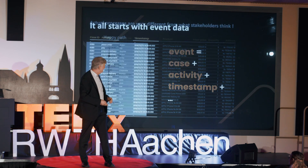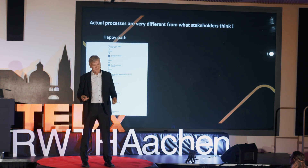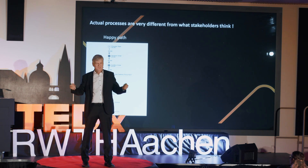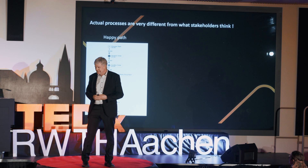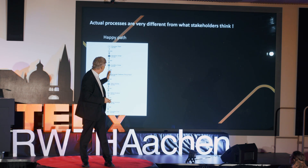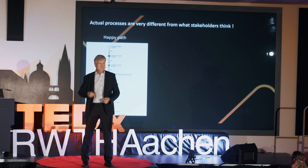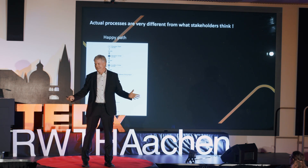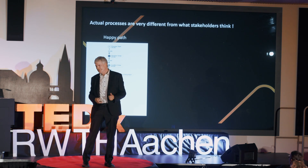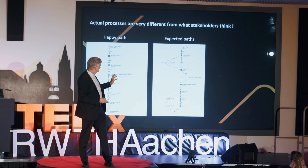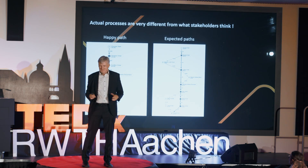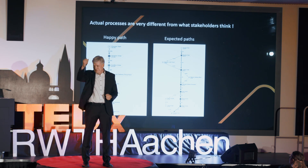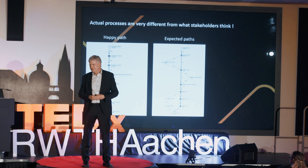Based on this very simple observation, you can start constructing models — representations of what is happening. Something very interesting happens here: this is often what people want to happen. They think of processes as doing that, that, that, and then we are done. They realize there are also some things that can happen where you cannot simply walk the happy path and there are some deviations.